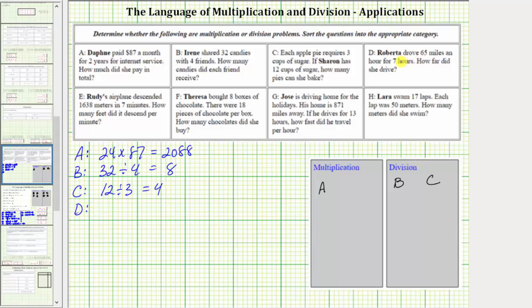For D, Roberta drove 65 miles an hour for seven hours. How far did she drive? Well, her rate is 65 miles per hour, or per one hour, and she drove for seven hours. And therefore, 65 times seven will give us how far she drove.